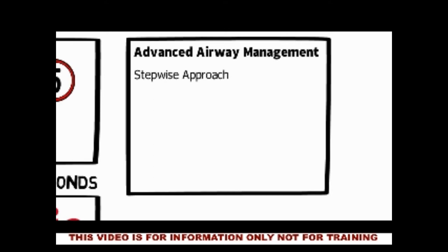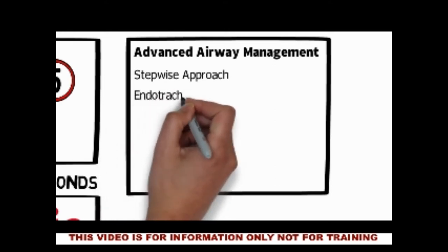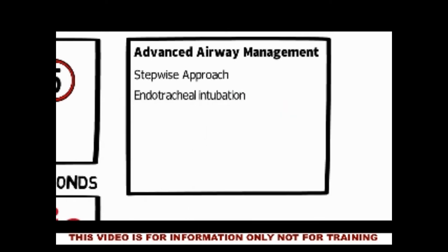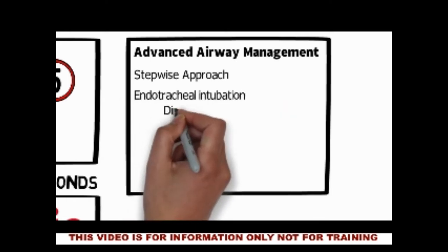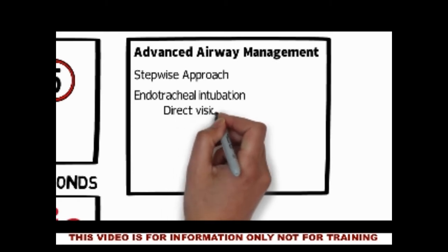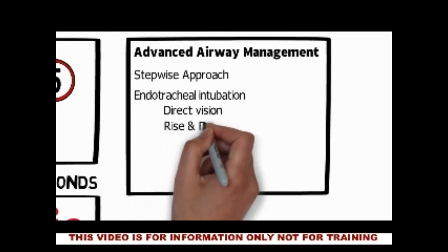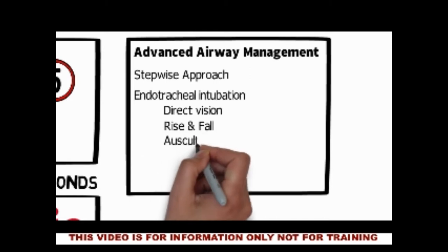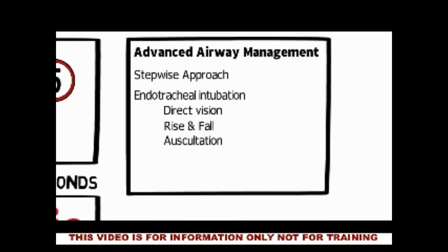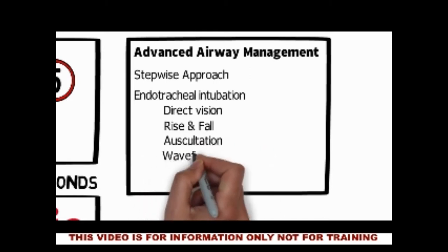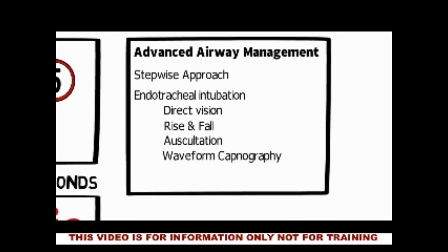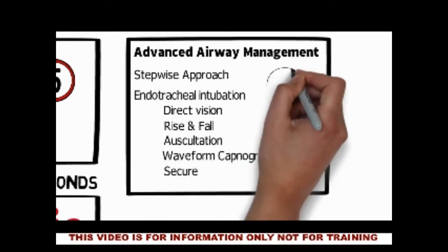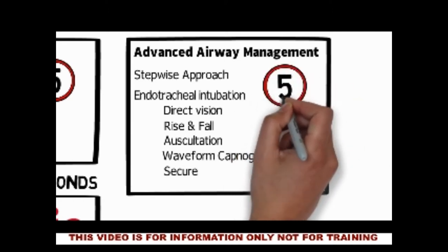We will want to see endotracheal intubation using an appropriate technique. We will be looking for the tube to be inserted under direct vision, rise and fall of the chest, auscultation bilaterally and over the epigastric region, waveform capnography to be put in place, and the tube secured. Again, no interruption of longer than 5 seconds of CPR at any point.